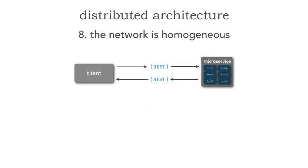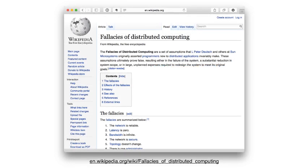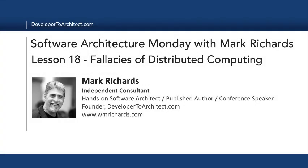The final fallacy, fallacy number eight, is the assumption we make that the network is homogeneous — that it is all the same. Nothing could be further from the truth. There are all sorts of products, product companies, and heterogeneous equipment and systems within the network. We can't make assumptions that we're always using Cisco, or always using Barracuda, or always using Juniper — the network is heterogeneous. These eight fallacies are really important to take into account when breaking apart our monoliths or entering into a distributed architecture world. This has been Software Architecture Monday — my name is Mark Richards, please stay tuned next week for another architecture lesson. Thank you so much.